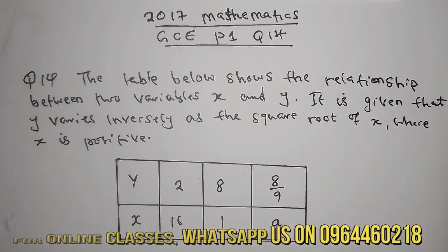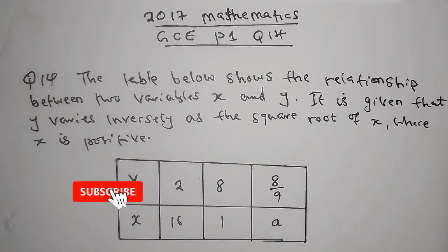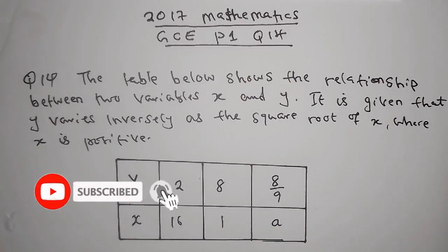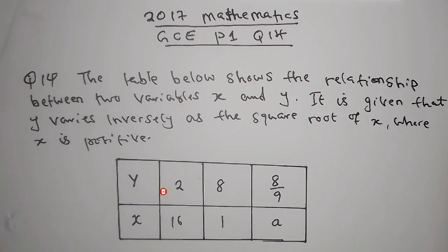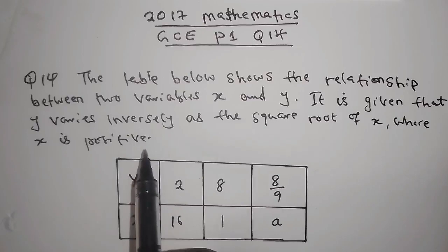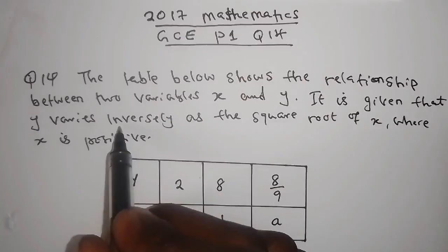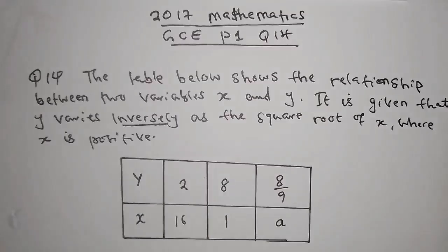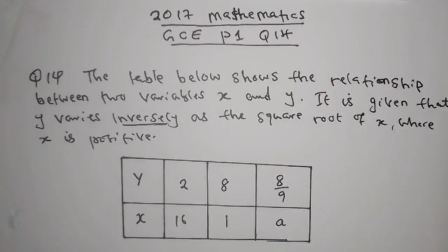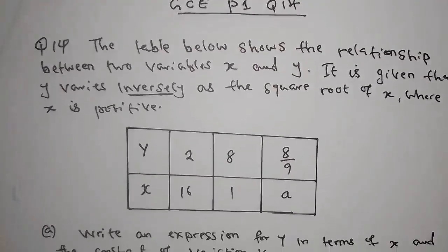Before I dive into this question, please make sure that you subscribe to our channel so that you don't miss any information like this. We have been told that the kind of variation is inverse variation. And this is the most important thing, because if you don't know what kind of variation, it becomes very difficult.